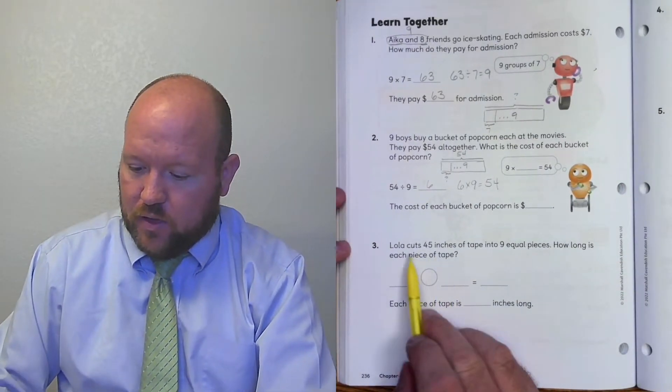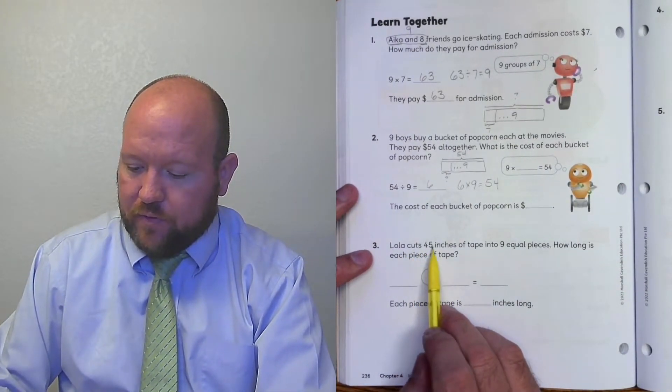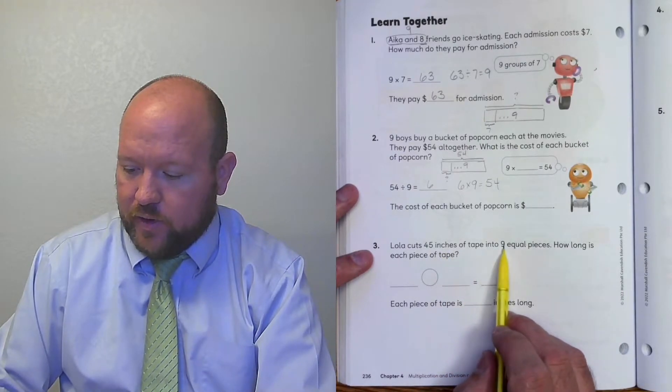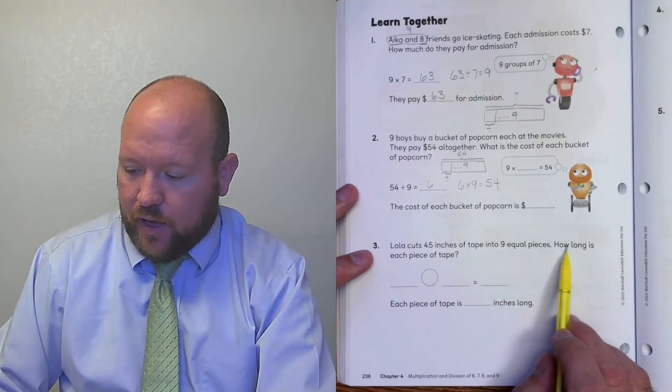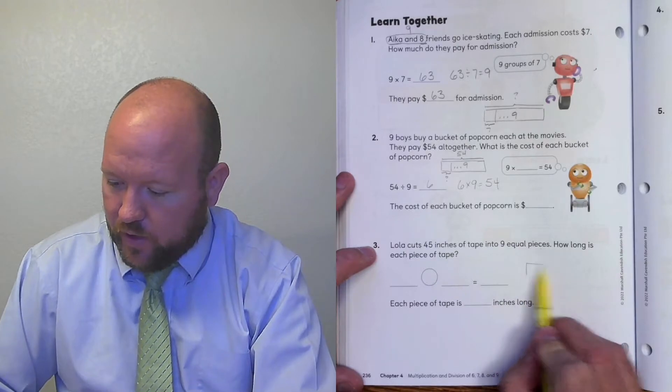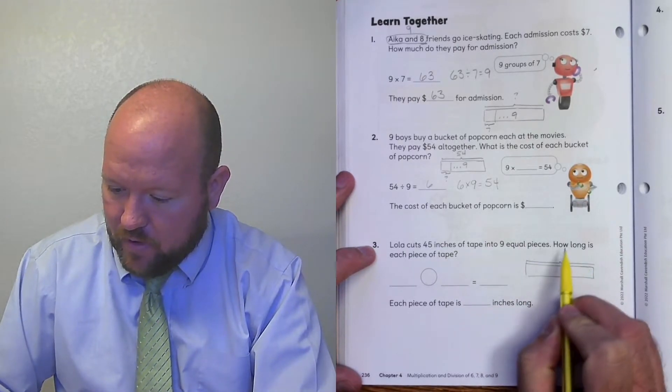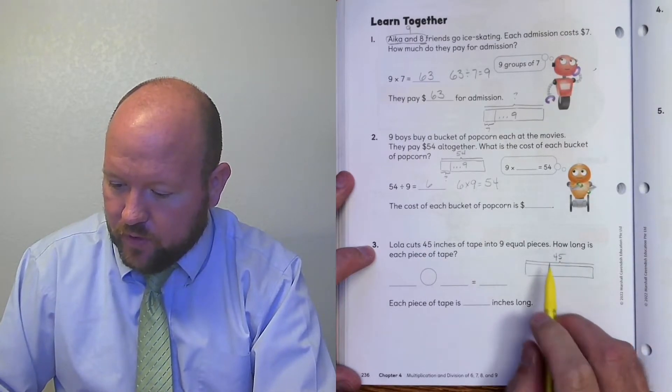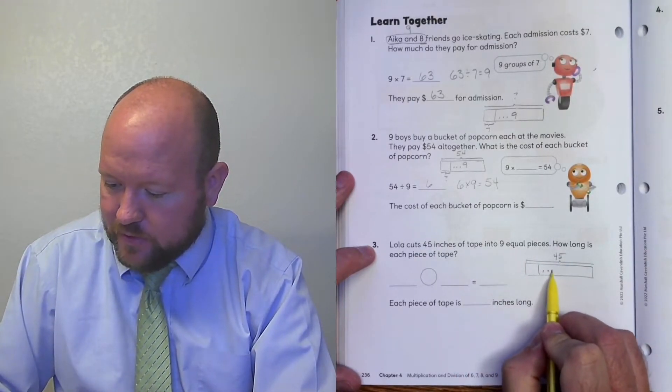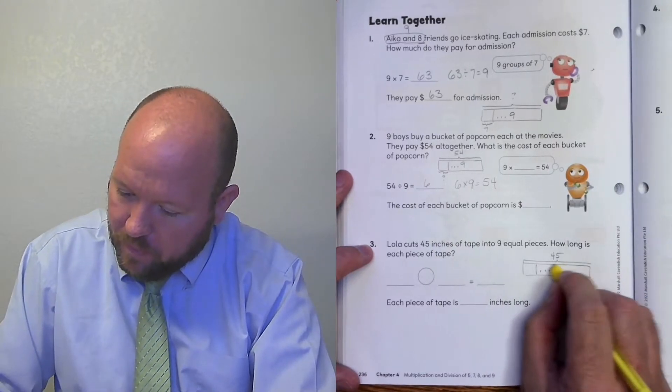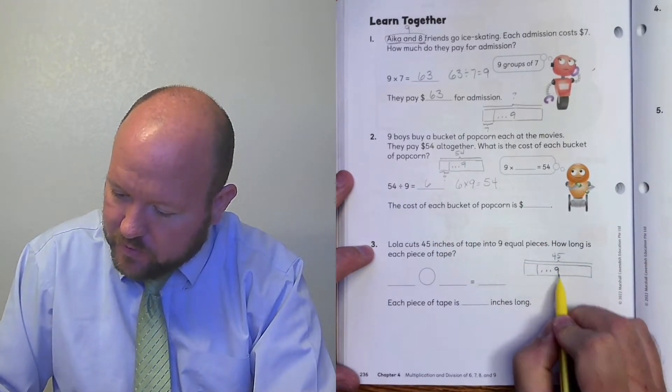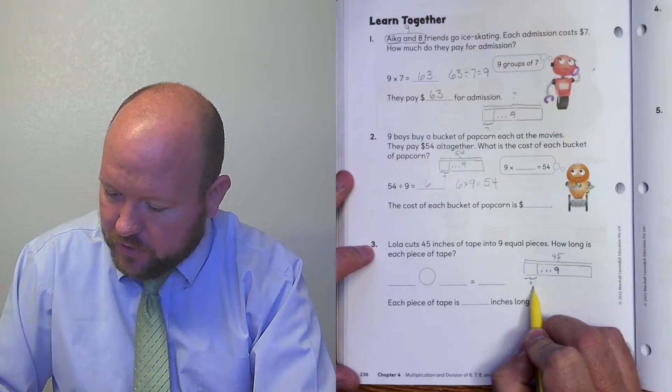Number 3. Lola cuts 45 inches of tape into 9 equal pieces. How long is each piece? So we have 45 inches of rope. 9 equal pieces. How much is each piece?